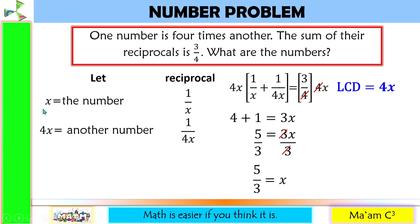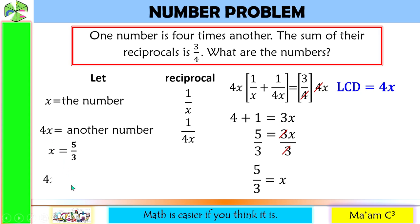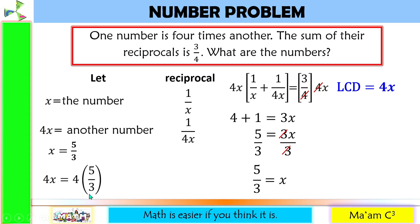Now we have the value of x, which is 5 over 3. To solve for 4x, we multiply 4 by 5 over 3, and 4 times 5 is 20, so we have 20 over 3.